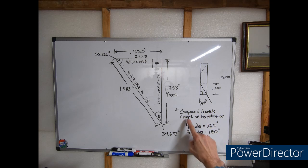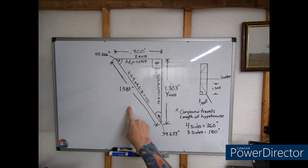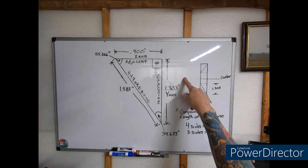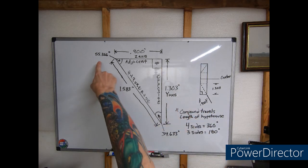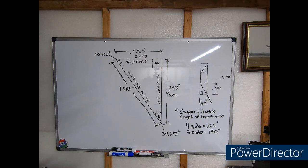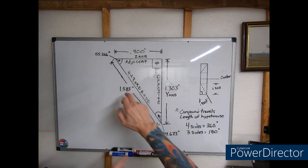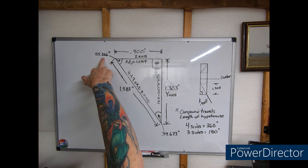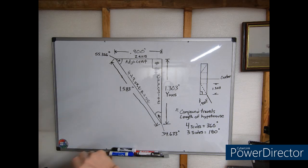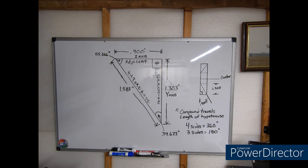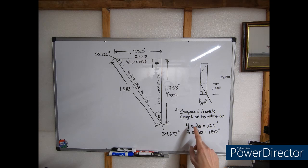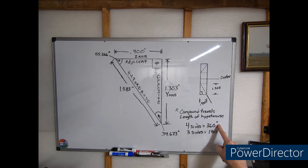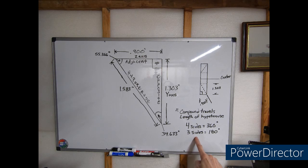I made a little diagram here on the board with the numbers we just got off the trig calculator. The compound travels the length of the hypotenuse. This will be the travel of the compound. This will be the travel of the cross slide. This is our angle that the compound's set to. We're going to use a dial indicator to make sure everything corresponds to get this, make sure our compound is set at that angle.